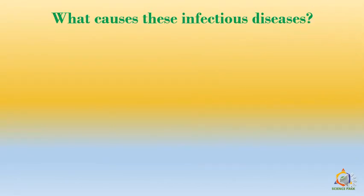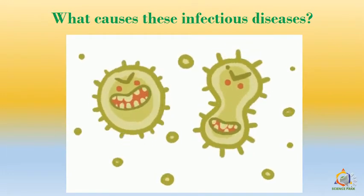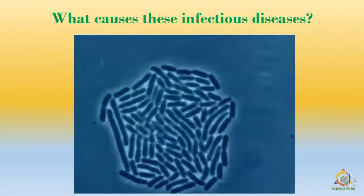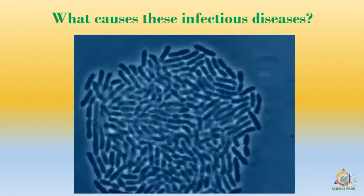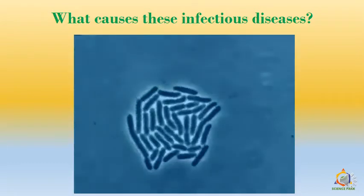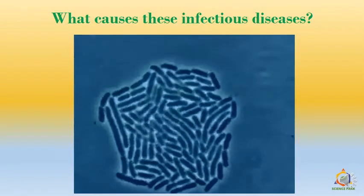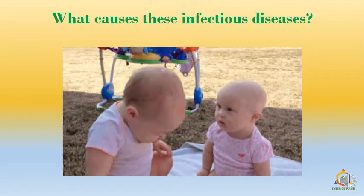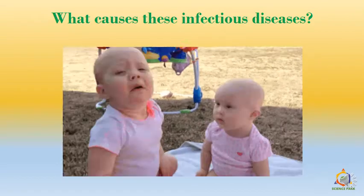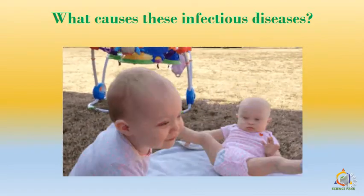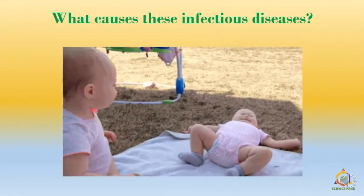What causes these diseases? Microorganisms, which we also call germs. These are present everywhere, and when they infect, they multiply so rapidly that the person gets the disease very soon. So how does one person's disease get passed on to another person? When a person has a cold, the germs from his body spread in the air, and when he coughs or sneezes, another person's body also catches the disease.